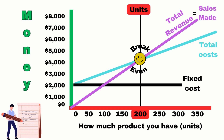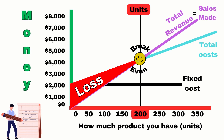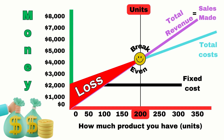That space between your total revenue and your total cost — between the turquoise line and the purple line — shows your loss before you get to the break-even point. Anything in between those lines that goes past the break-even point, that now becomes your profit.